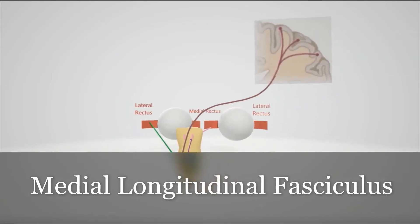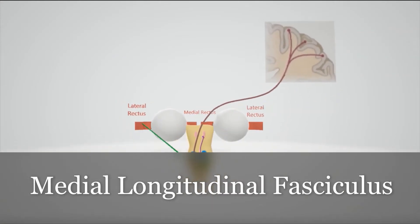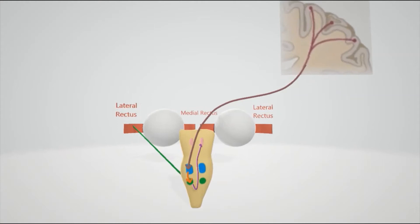Here we're going to talk about the medial longitudinal fasciculus. This allows communication between left and right eye when a person looks, let's say, to the left.